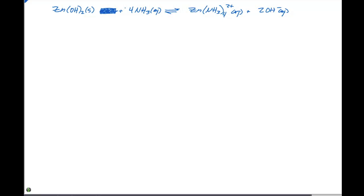Any salt that has a KSP value, we know it's gonna be insoluble. Same thing happens for complex ion formation. If you see a complex ion on the KF table, we know that a complex ion is gonna form.